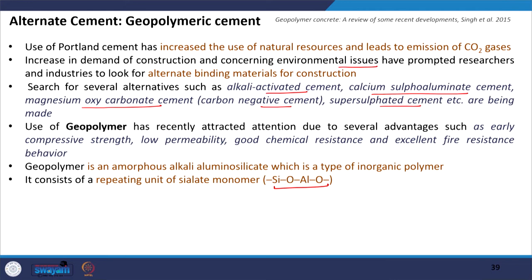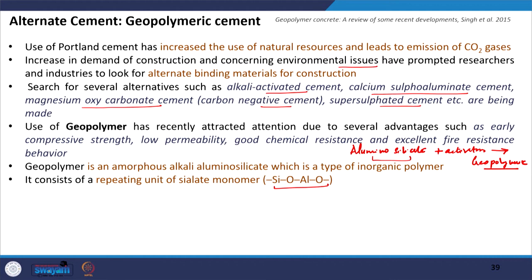For production of geopolymer concrete you need alumino-silicate materials and some activators to dissolve the alumina and silica present, producing a geopolymeric chain. We have already discussed various waste by-products having these characteristics: fly ash has alumina and silica, GGBFS has alumina and silica, and so does metakaolin.